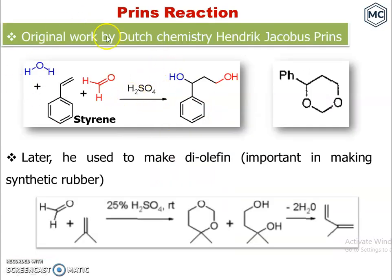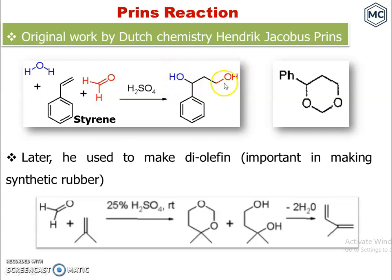The original work was done by Dutch chemist Henrik Jacobus Prins. In his original paper, he reacted styrene with formaldehyde in the presence of acid and obtained a dioxane and a 1,3-diol. Later, the Prins reaction was used to make diolefin, which is an important compound very useful in making synthetic rubber.